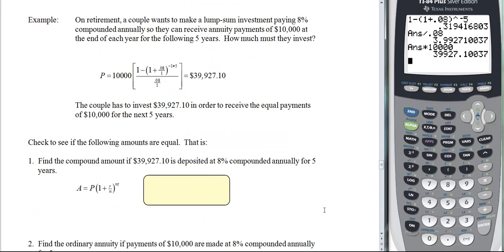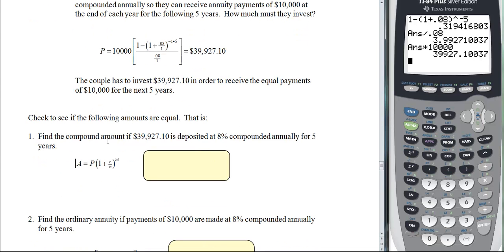Now, I want to check something. We're going to see if the following amounts are equal. So I want you to find the compound amount of $39,927.10 if it's deposited at 8% compounded annually for five years. So I'm still using the same information up here. But now this is compound amount. This is our old formula.